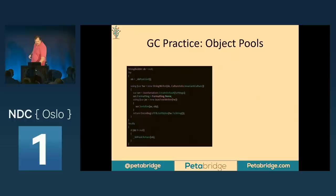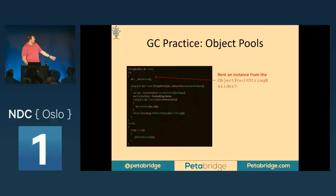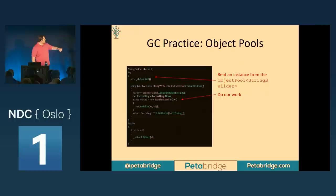Here's some code from the Akka.NET project where we do JSON serialization using our default serializer. Rather than allocating a brand new StringBuilder each time, we allocate a fixed number up front when the process starts — I think 1,024 StringBuilders by default. We get a reference to a StringBuilder pool, grab one copy to use inside the Newtonsoft.Json operation, pass it into the JSON text writer, call Serialize, convert to a byte array, and then at the very end in our finally block we return that StringBuilder back to the pool.